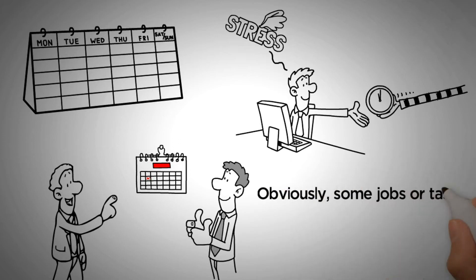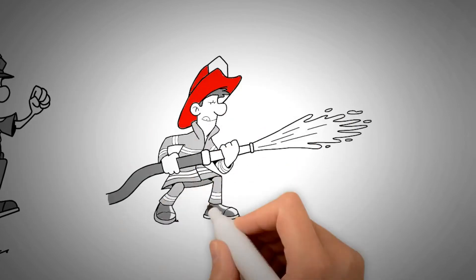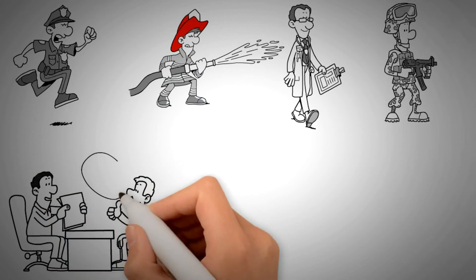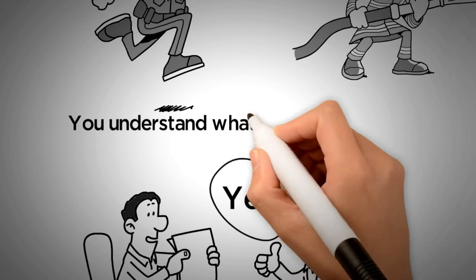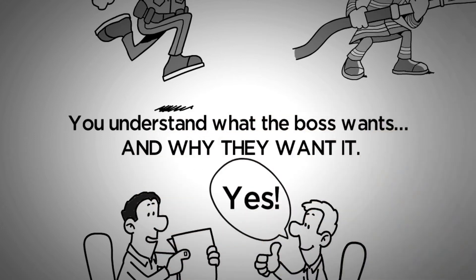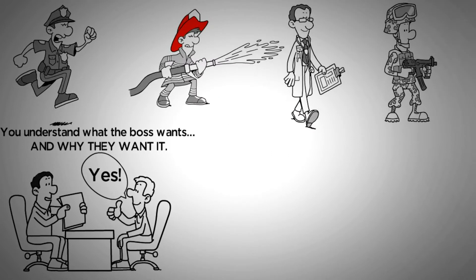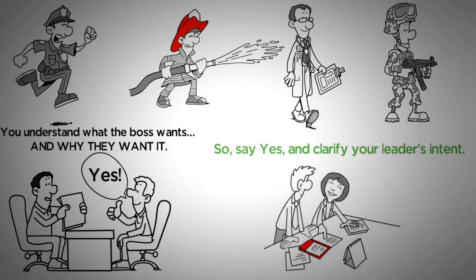Obviously, some jobs are tasks you just start doing right now until you're done. This is a lot more likely in less corporate settings like law enforcement, fire, emergency medicine, or the military. Even in those environments, when you say yes, you want to ensure that you understand what the boss wants and why they want it. Why they want it can sometimes tell you a lot more about how you should get your work done than what your boss actually asks you for. After all, they can't do your job as well as you do. So, say yes and clarify your leader's intent.